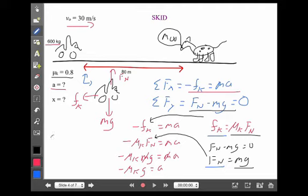So, in this case, my acceleration must be negative, while the coefficient of friction is 0.8, gravity is 10. That gives me an acceleration of negative 8 meters per second squared. Very big acceleration for a car, okay? It's getting to a stop.